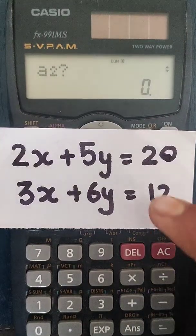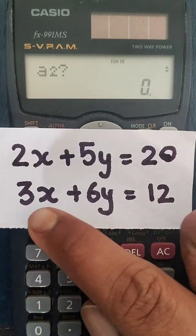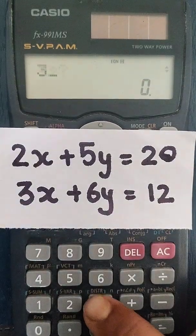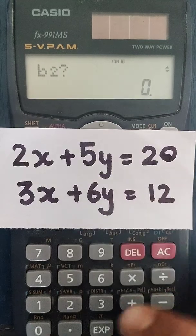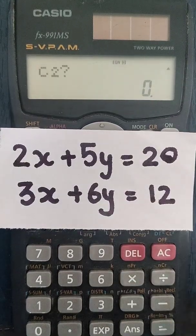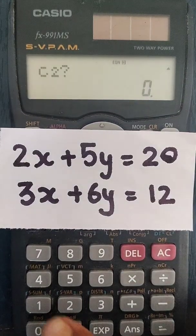Then for a2, that is for equation number two, we have a2 as three. So we are going to enter three. For b2, we have six, we are going to enter six. And for c2, we have 12. So we are going to enter 12.